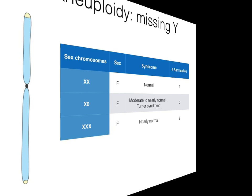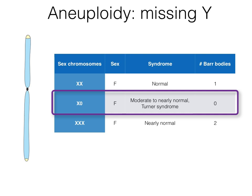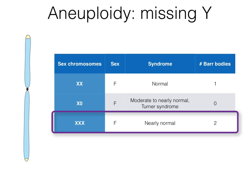Additional important observations involve aneuploids that lack the Y. For example, aneuploids with a single X chromosome and no Y result in Turner syndrome. Affected individuals are females whose symptoms can be relatively minor. Triple X aneuploids are nearly normal females.